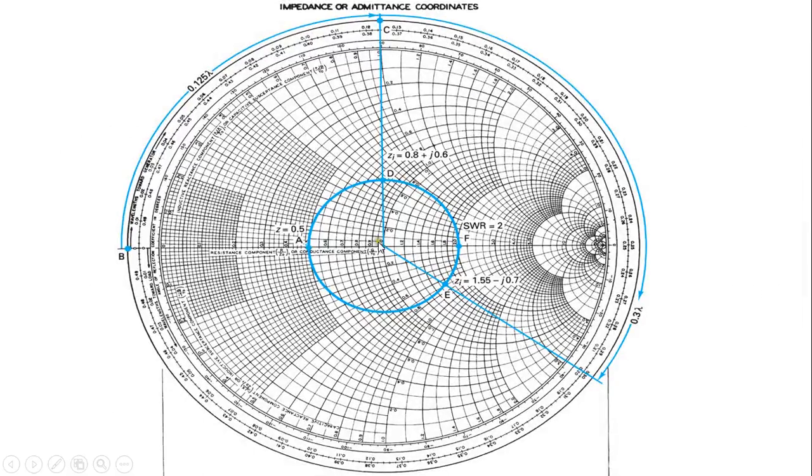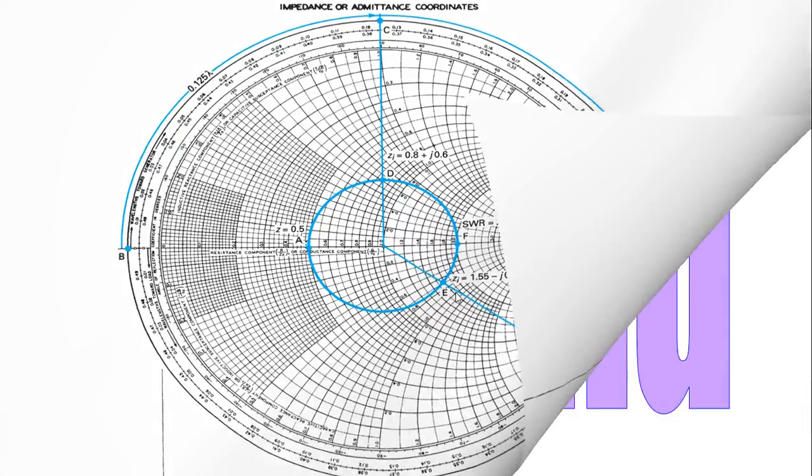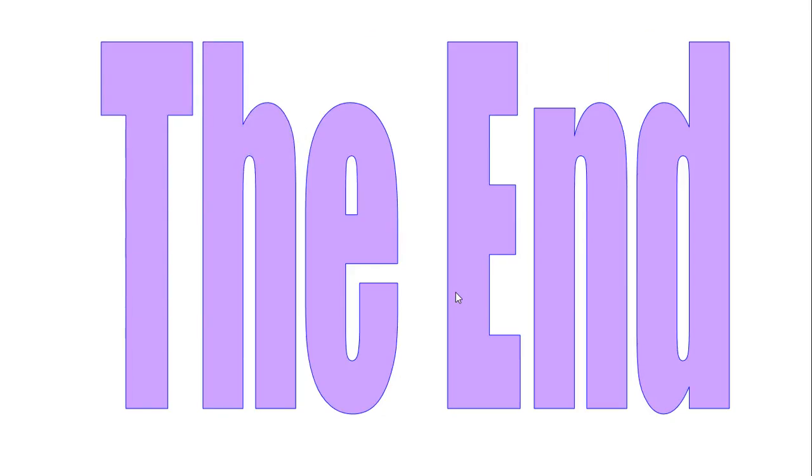This is the load point, and this is the circle which intersects at point F where SWR equals 2. Point D is at 0.8 plus j0.6, which is our normalized value. Then we rotate 720 degrees and find point E, which is at 1.55 minus j0.5. This is the demonstration. Thank you sir, salaam walikum.